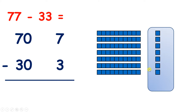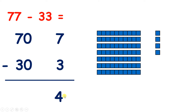So let's start with our units. We have 7 units and we're subtracting 3, so let's take away 1, 2, 3. That leaves us with 4 units. And even though I'm subtracting, I'm going to write an addition symbol here, because we're going to add our 4 leftover units to however many tens we have left over to get our answer.